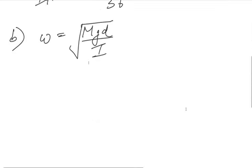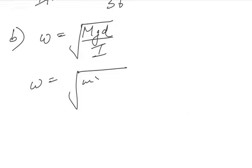So here we know the value of I_pivot, and mass M, G, and D - that is the pivot distance L by 3 from the center of mass - and I of the rod is ML squared by 12.